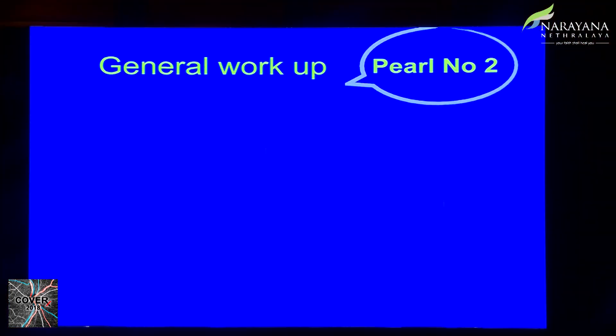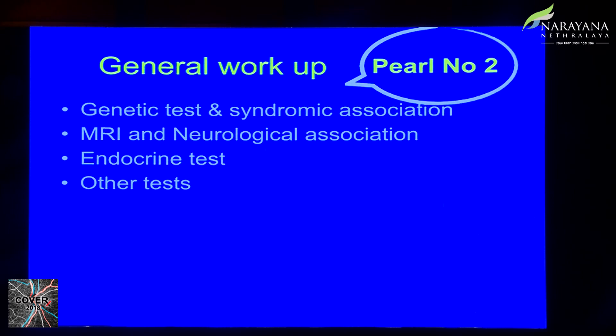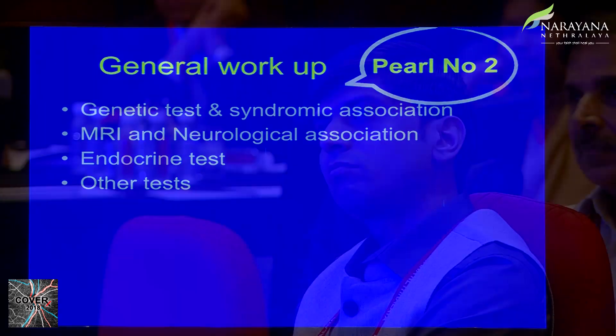There are two key pearls when seeing these patients. Pearl one: bilateral cases will present with poor vision and nystagmus, indicating a bilateral anomaly. Pearl two: unilateral cases will most often present to a paediatric ophthalmologist or squint surgeon with strabismus.